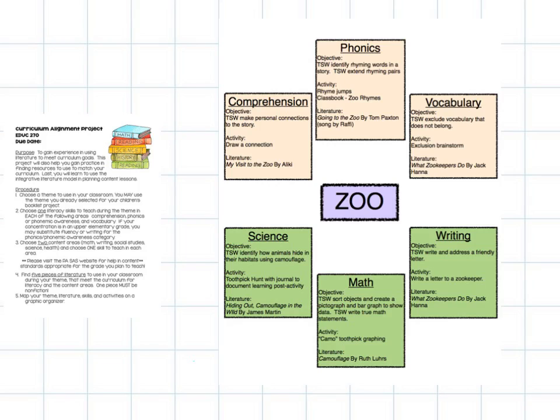At the bottom of my organizer, I've chosen actually three content areas. You only need to choose two, but I wanted to show you how it would look to find different activities in different areas. So I chose science, and math, and writing. And I have a science objective, a math objective, and a writing objective. And I have a science activity, and a math activity, and a writing activity. And I have literature that's different for each one within my text set for my theme of zoo.